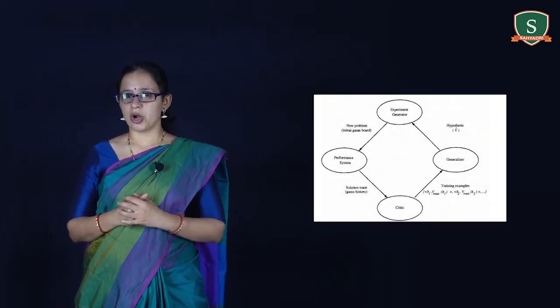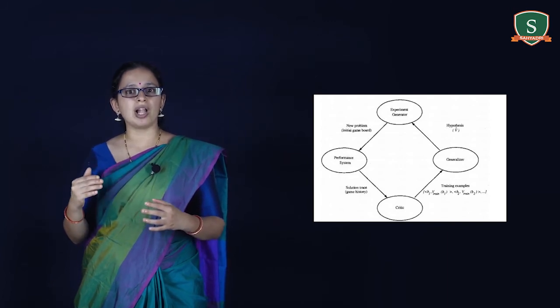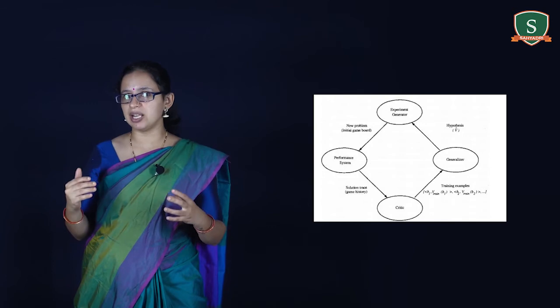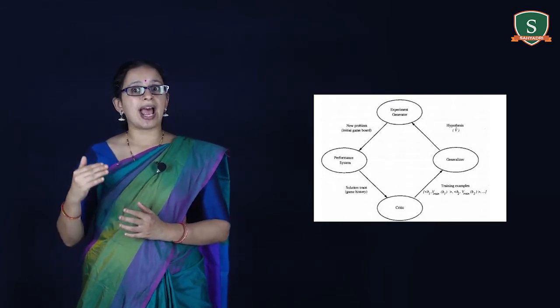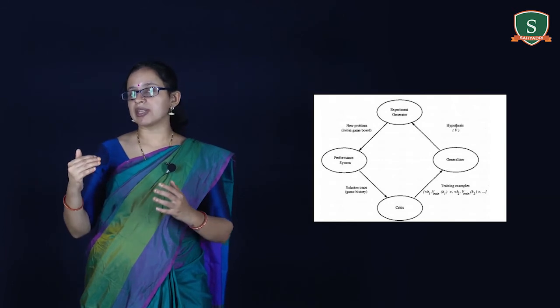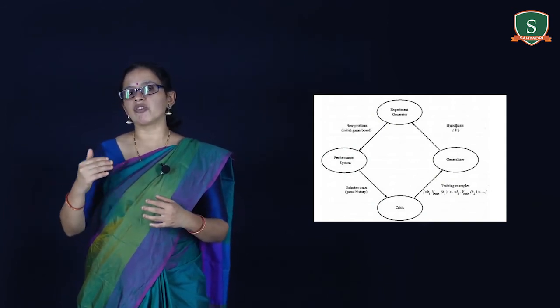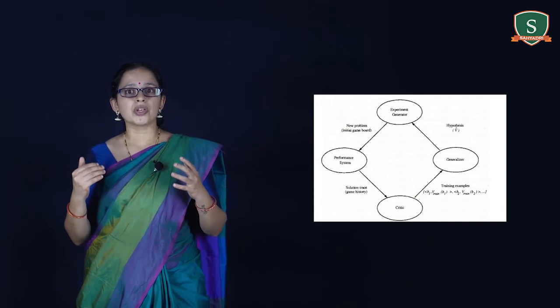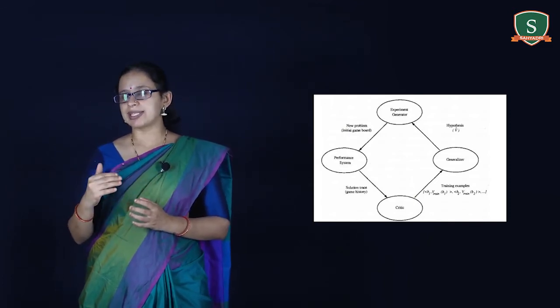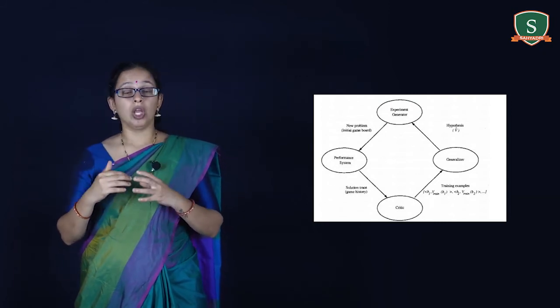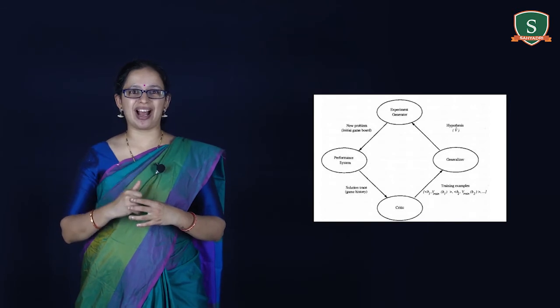The final design of the checkers learning system is described by four distinct program modules representing central components in many learning systems. The first module, the performance system, must solve the given performance task using the learned target functions. It takes an instance of a new game as input and produces a trace of its solution as output. For example, after learning, if you take a new game and win, what you learned is proper. Similarly, if after learning to drive you successfully navigate a car in traffic, what you learned is proper.